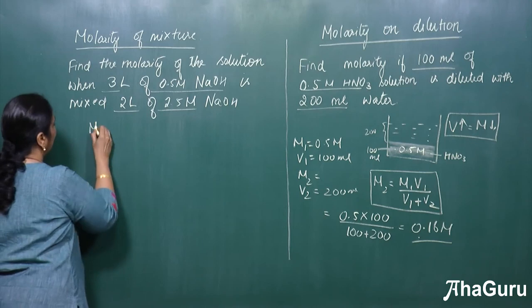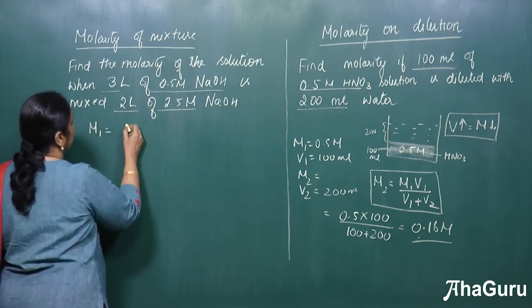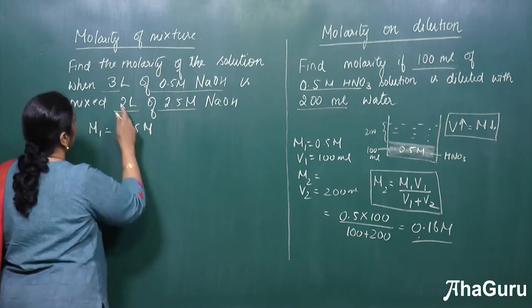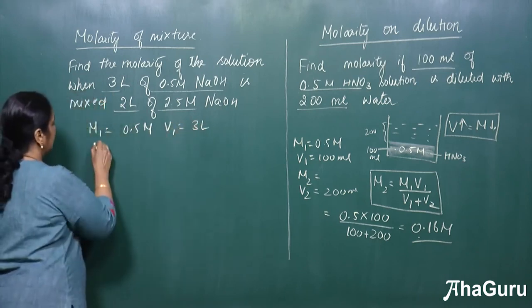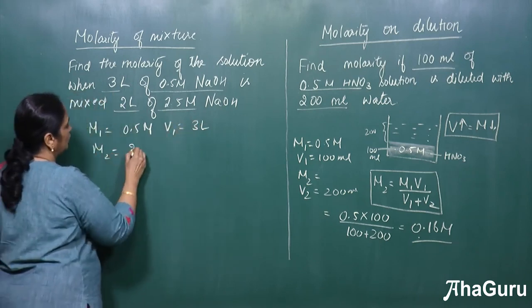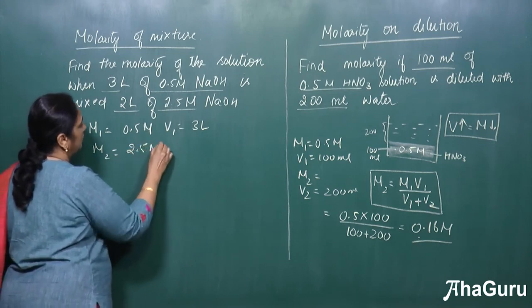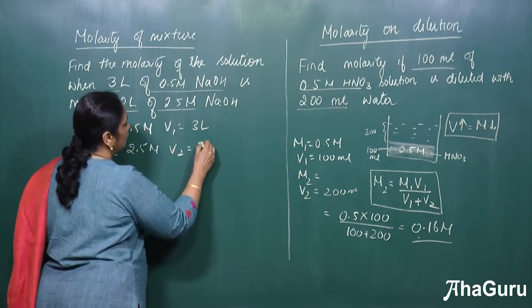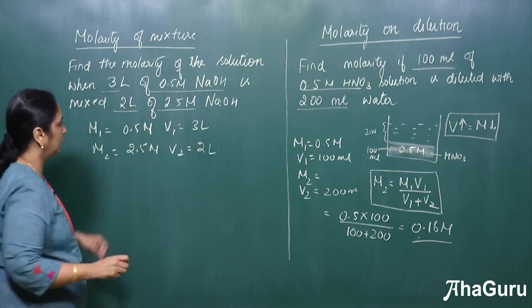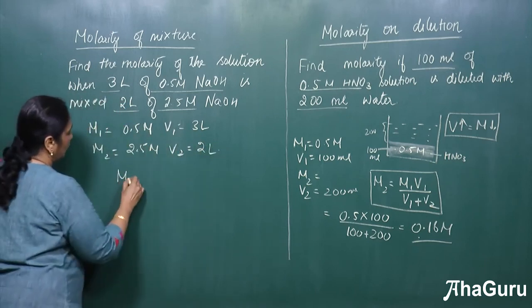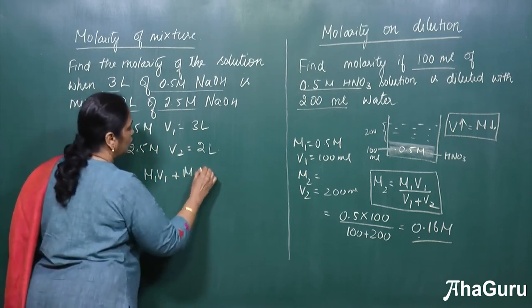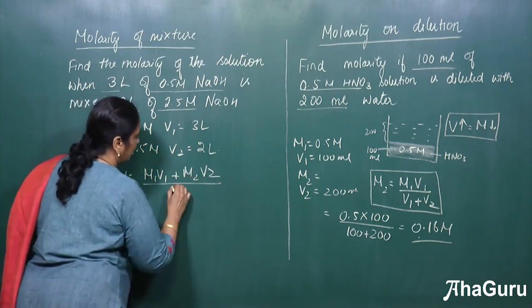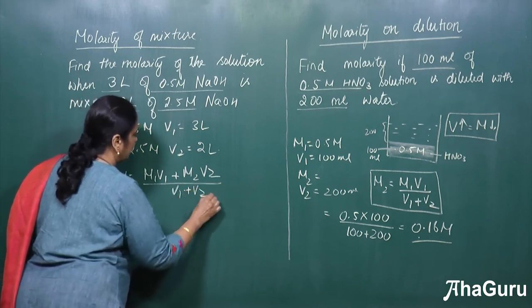So here, what is M1 here? M1 is 0.5 M and V1 is equal to 3 liters. Similarly, M2 is equal to 2.5 M and V2 is equal to 2 liters. So here the formula would be, molarity is equal to M1 V1 plus M2 V2 divided by V1 plus V2.